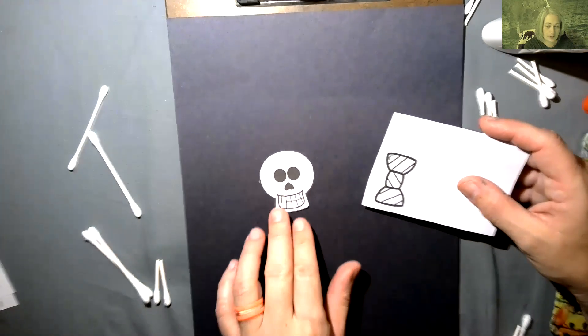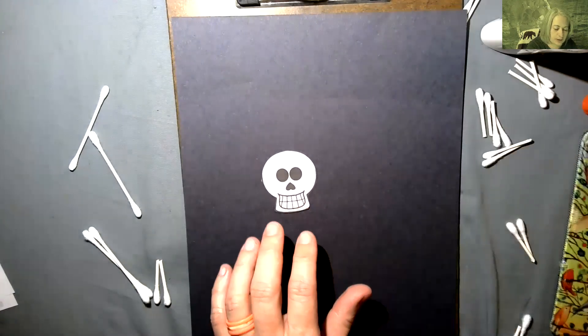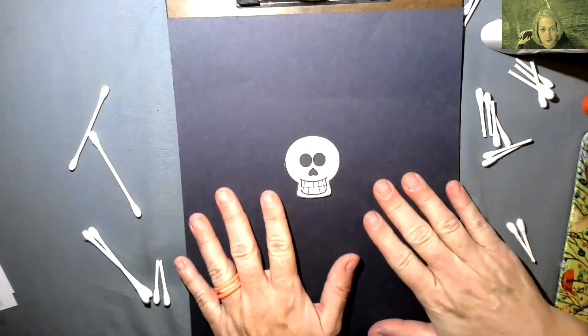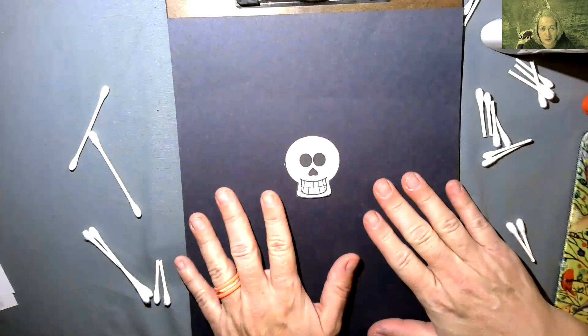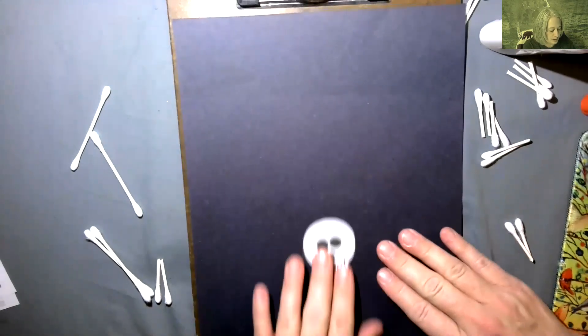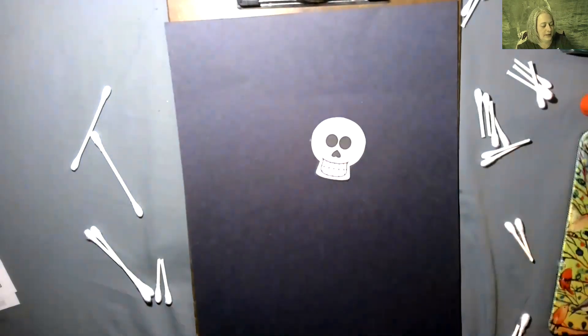I went ahead and cut mine out. If you can't print those, you can look at them and draw your own and then cut them out, so you don't necessarily have to have those. You'll need a black or dark piece of paper, or cardboard would work.